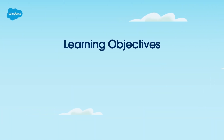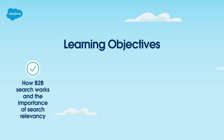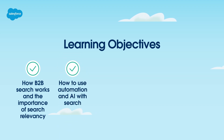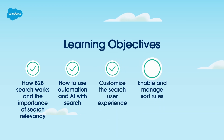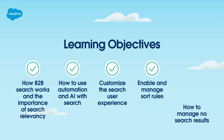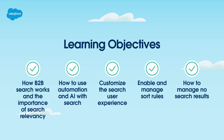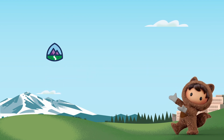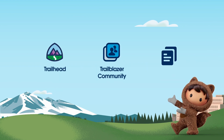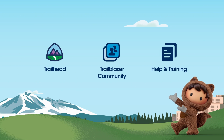In this video, we've explained how B2B Search works and the importance of search relevancy; described how to use automation and AI with search; listed steps for and benefits of customizing the search user experience; summarized steps for enabling sorting and adding, editing, and deleting sort rules; and demonstrated how to manage no search results. By using and customizing search in B2B Commerce, you get the most out of your store by helping buyers find exactly what they need, when they need it. For more information, please check out help.salesforce.com or visit us on Trailhead at trailhead.salesforce.com. Thanks for watching.